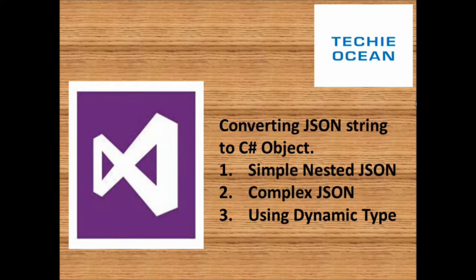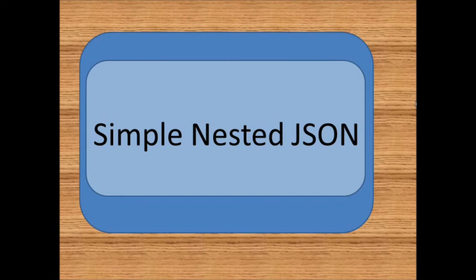In this tutorial we'll see how to convert a JSON string to a C# object. We'll see how to convert a simple nested JSON string into a C# object, then we'll take an example of a complex JSON string, and then we'll see how to use the dynamic type for reading the JSON string. Let's start with the simple nested JSON string.